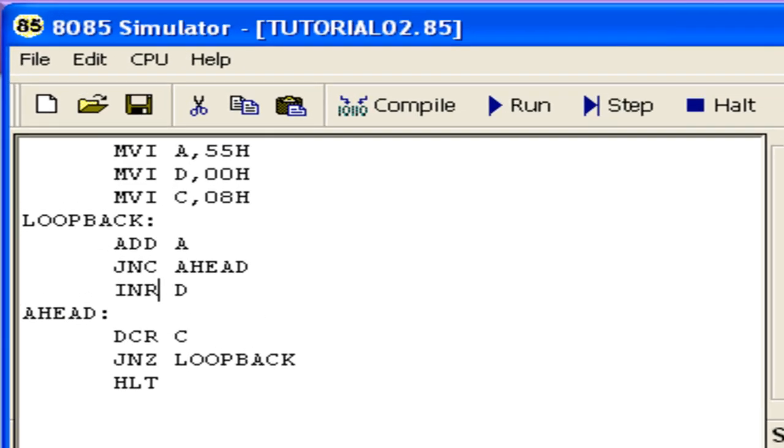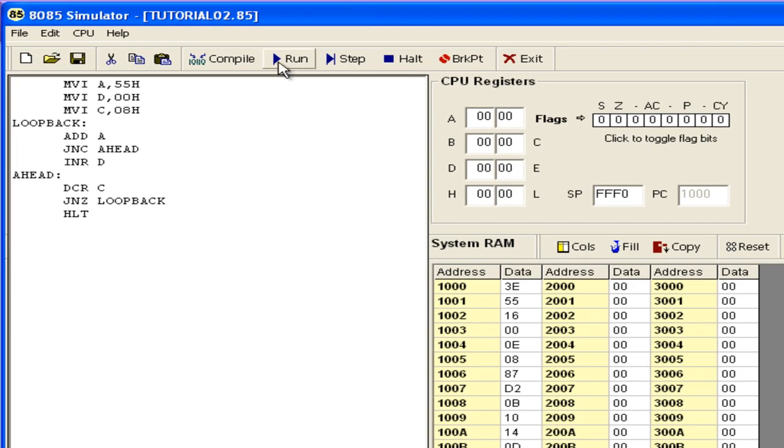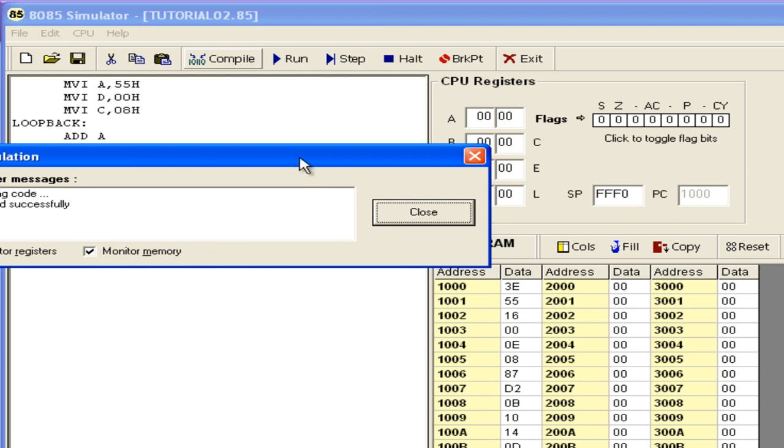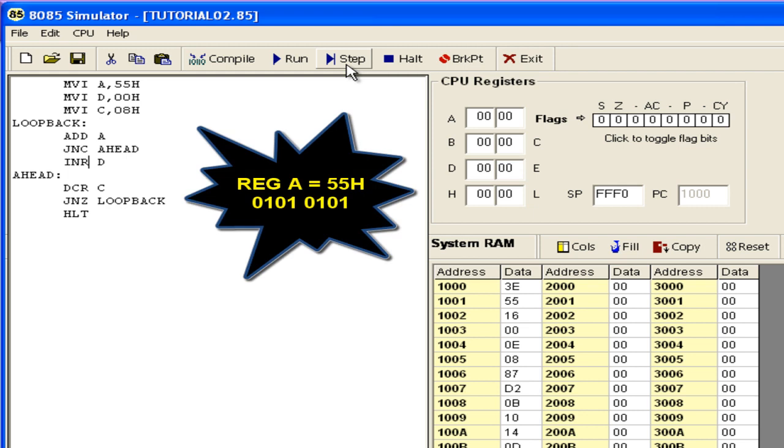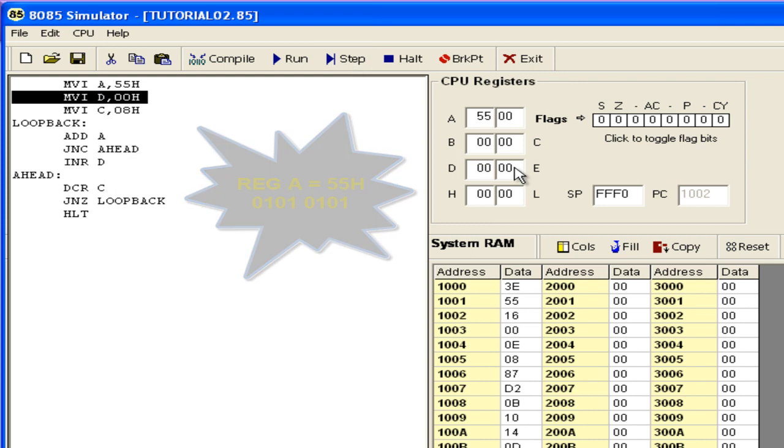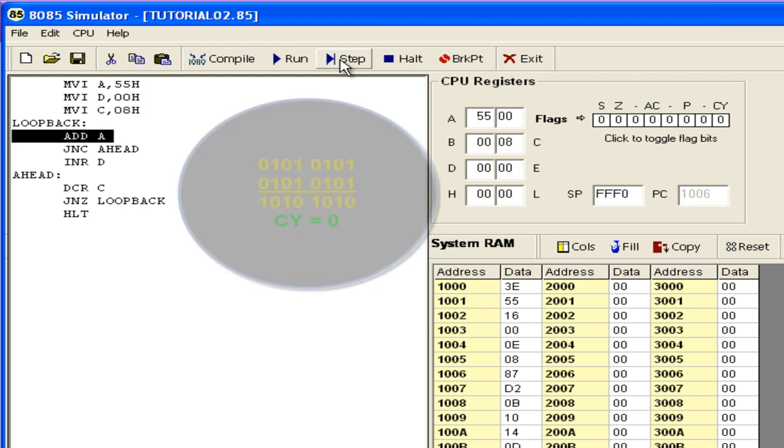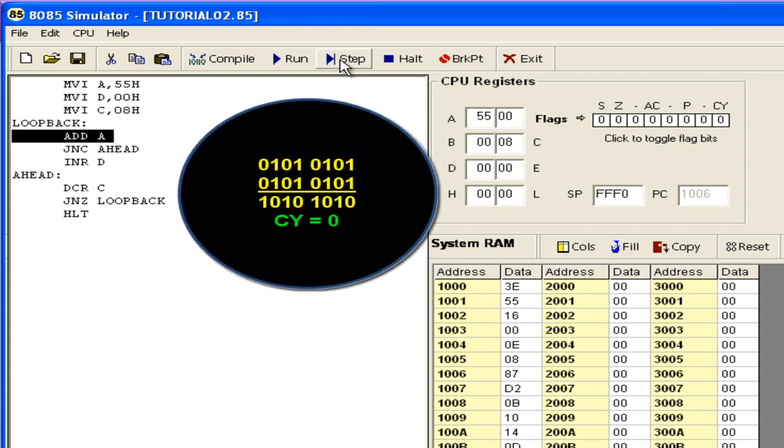I already entered the program over here. So let us compile it. That gives the result. So now execute the instructions step by step. If you see the value of A is 55. So that comes in register A. Value of D is 0. Value of C is 8.